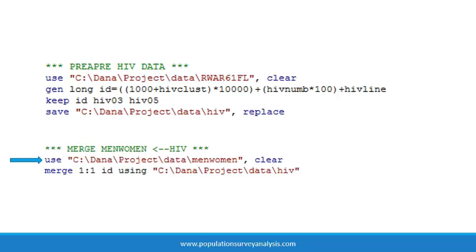Start by opening the master dataset, in this case the men-women dataset that we just saved. After the merge statement, we must specify the type of merge, the variable name that is common in both datasets, and then type using and the path name of the merging dataset in quotes. There are three types of merges generally performed with survey data: one-to-one, many-to-one, and one-to-many. Our example of merging HIV status to person is an example of a one-to-one merge.